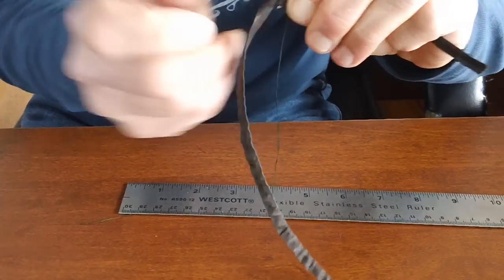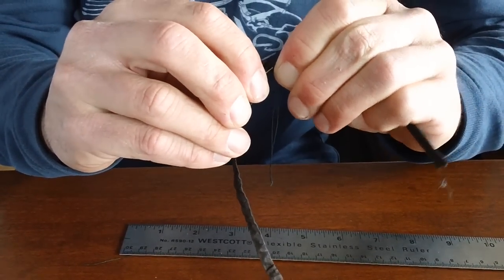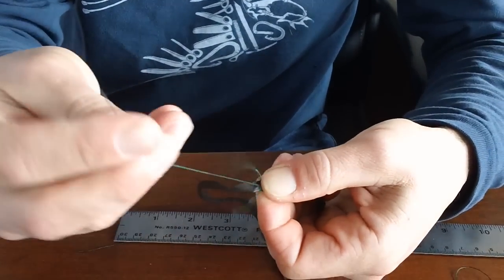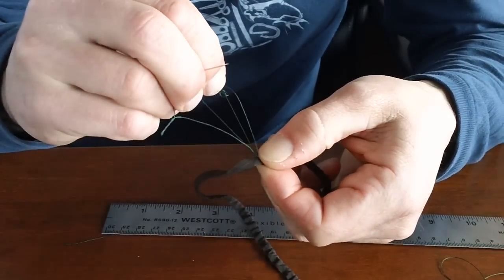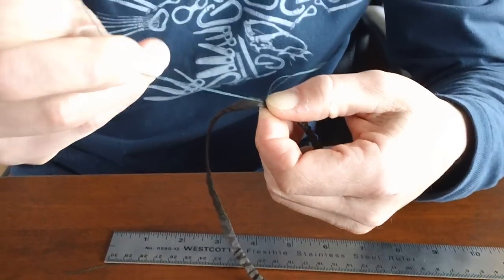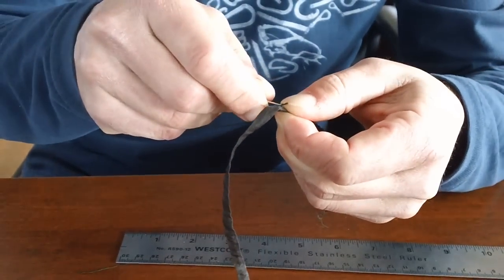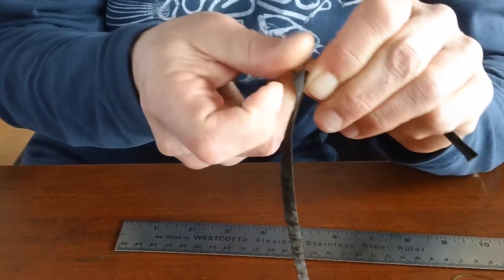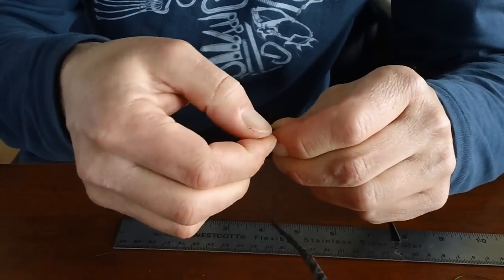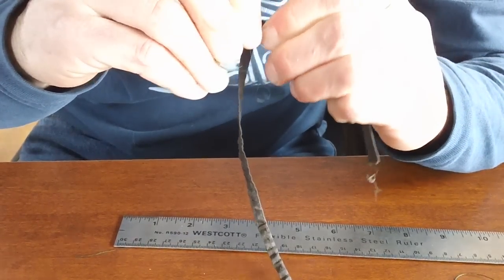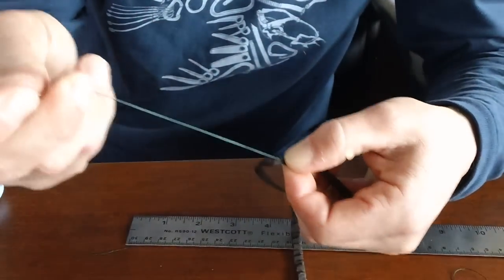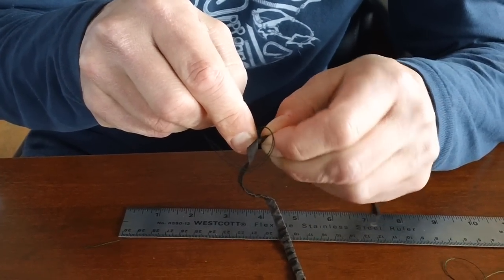And stitch this end just like we did the other end. And I'm going a couple of millimeters above the end of the Teflon. Or sorry, not the Teflon. I'm going a couple millimeters above the elastic where the elastic ends.